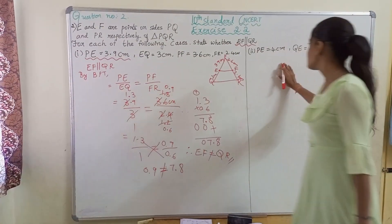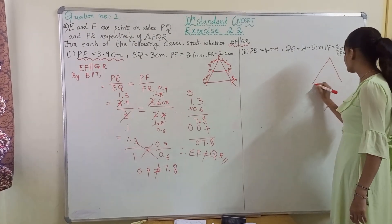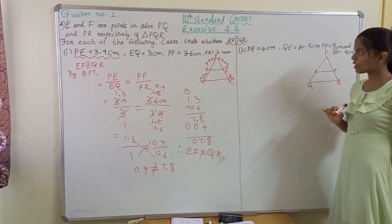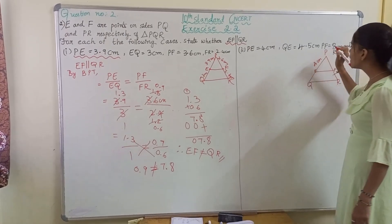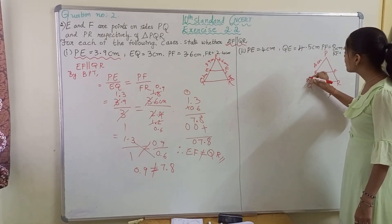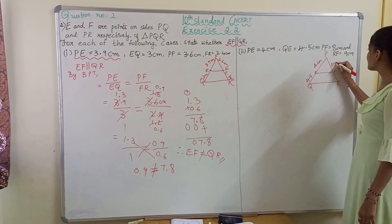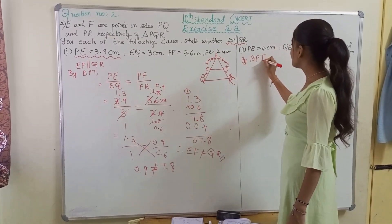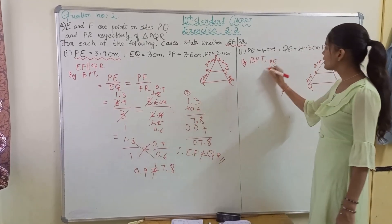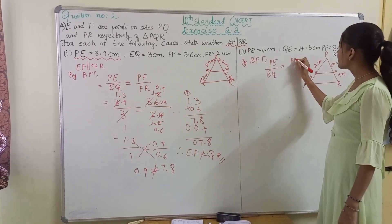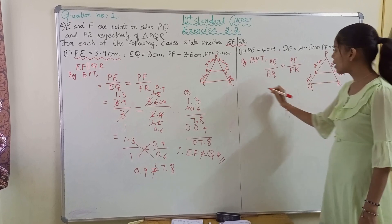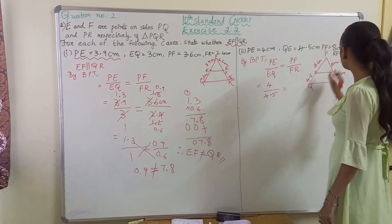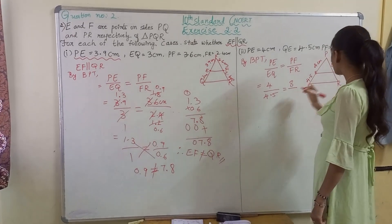Next, coming to the second part of this question. Let us draw triangle PQR again for better understanding. E and F are the points — let us draw EF. Now PE is 4 cm, QE is 4.5 cm, PF is 8 cm, and RF is 9 cm. So again by BPT: PE upon EQ will be equal to PF by FR. So PE is 4, EQ is 4.5, PF is 8 cm, and FR is 9 cm.